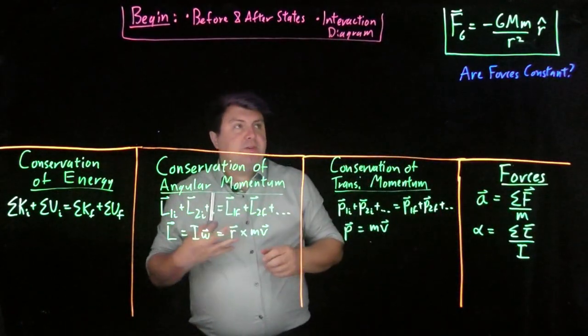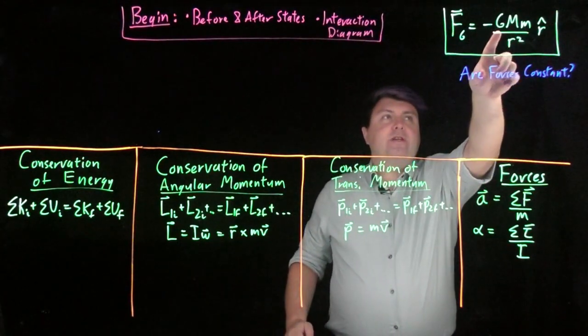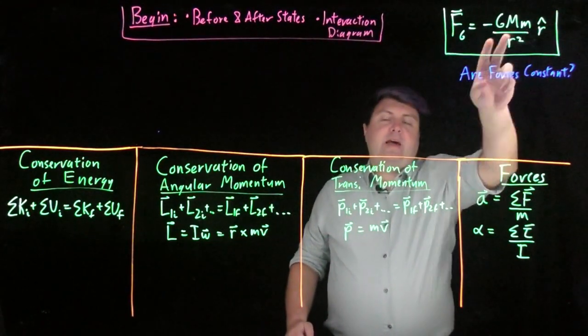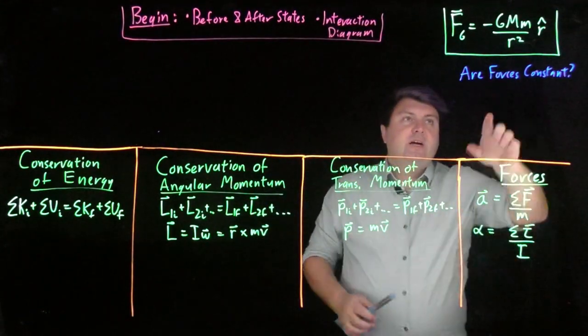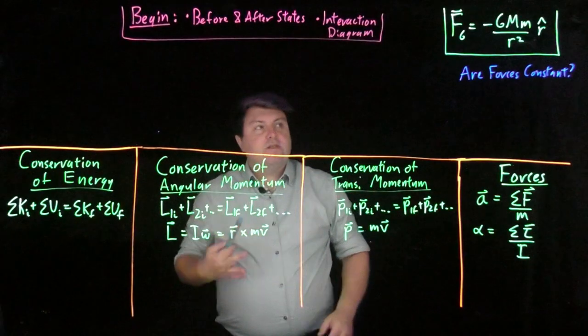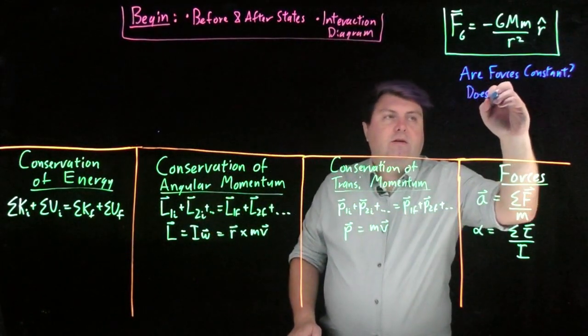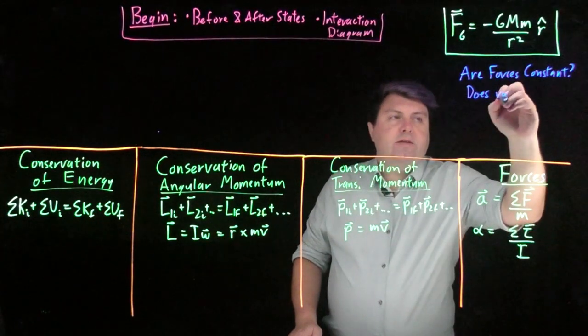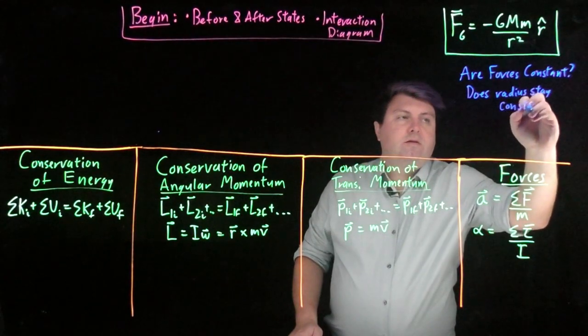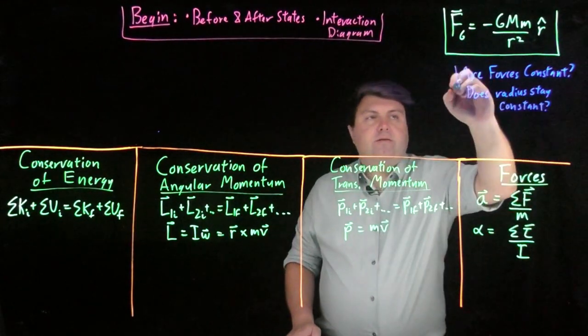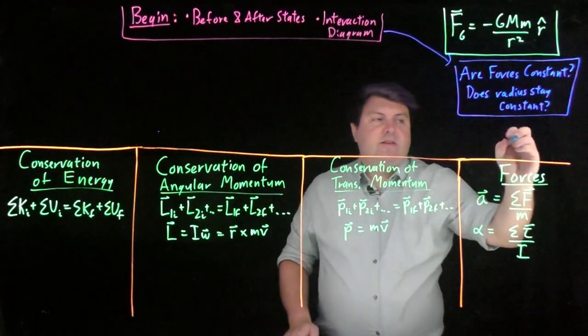Just like we did, but now specific to gravity, looking at gravity, we can see that G is not going to change. M and M, masses don't really change very easily without things getting very ugly. Really the only thing that changes is the radius. So what we can really ask is, does the radius stay constant?